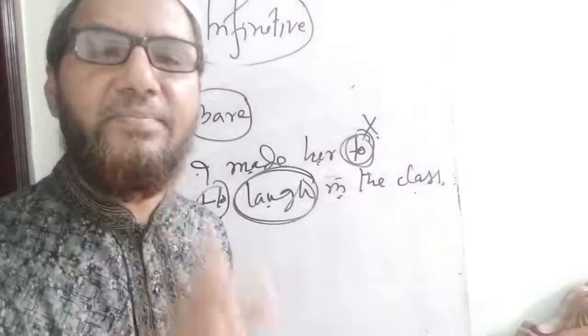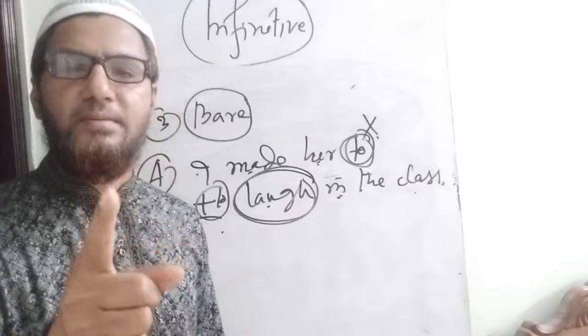Made, get, have - in active voice there is no 'to'. Clear?